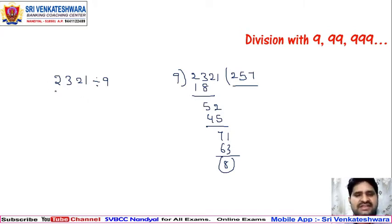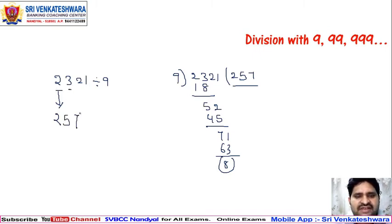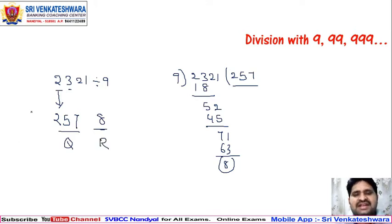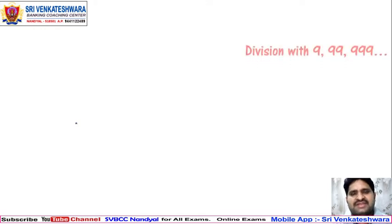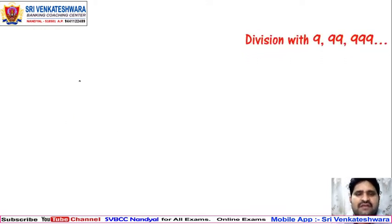Now here's the shortcut method — it's very easy. Take 2 directly, then add every number with the next: 2 plus 3 is 5, 5 plus 2 is 7, 7 plus 1 is 8. Write the last number separately. So 257 is exactly the coefficient and 8 is exactly the remainder. That's how easy it is.